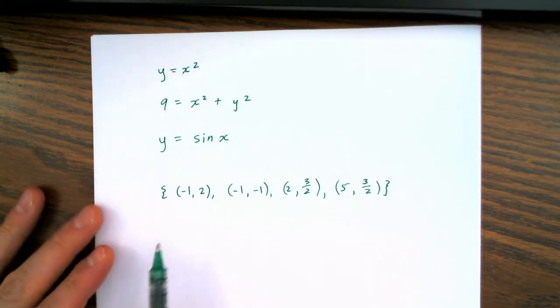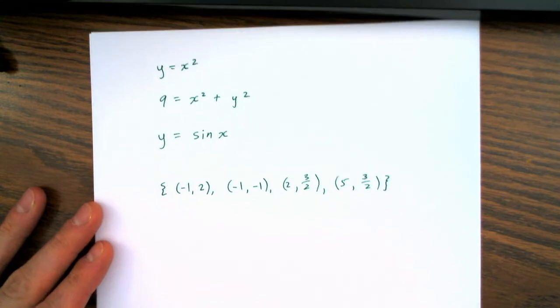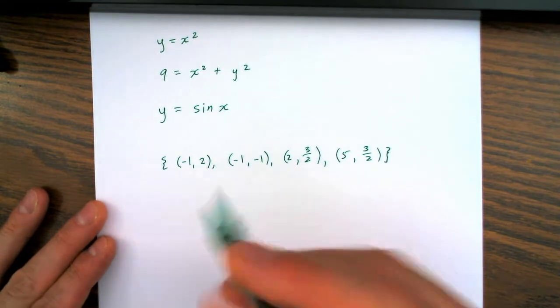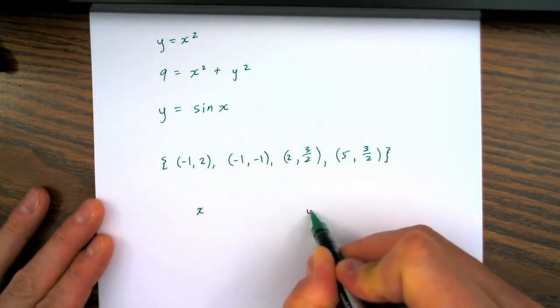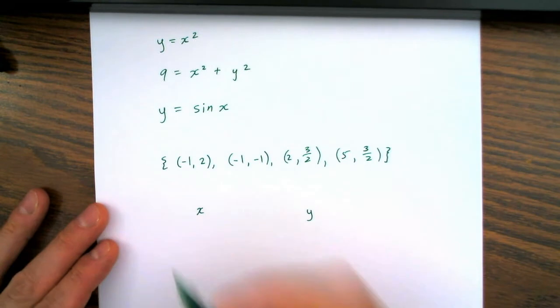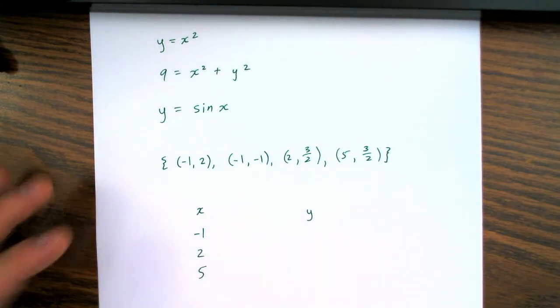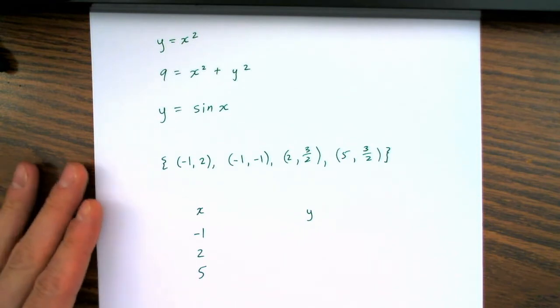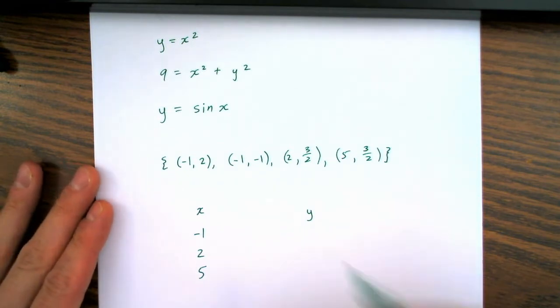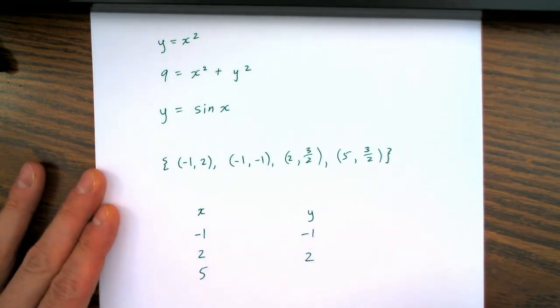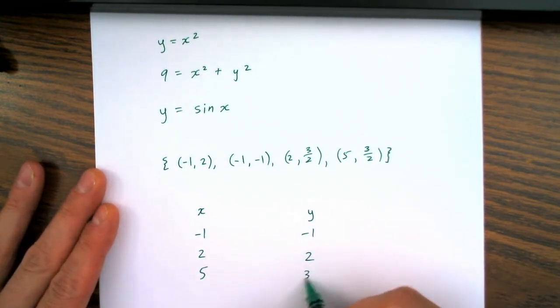We can take this relation and we can represent it using what's called a mapping. A mapping takes x values and maps them to y values in our case. If we look at the possible x values, they are negative 1, 2, and 5. There's only three x values, even though there are four points. And there are only three y values: negative 1, 2, and 3 over 2.